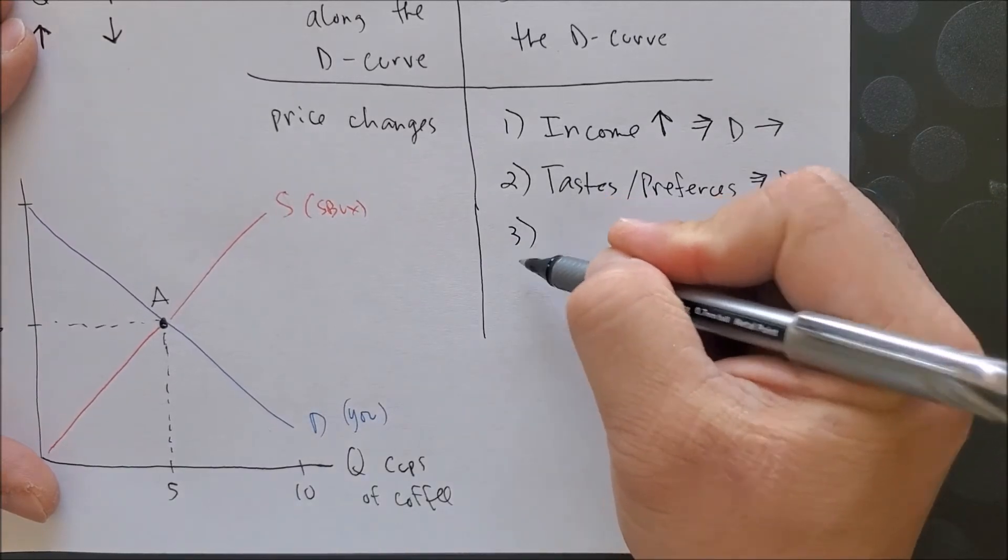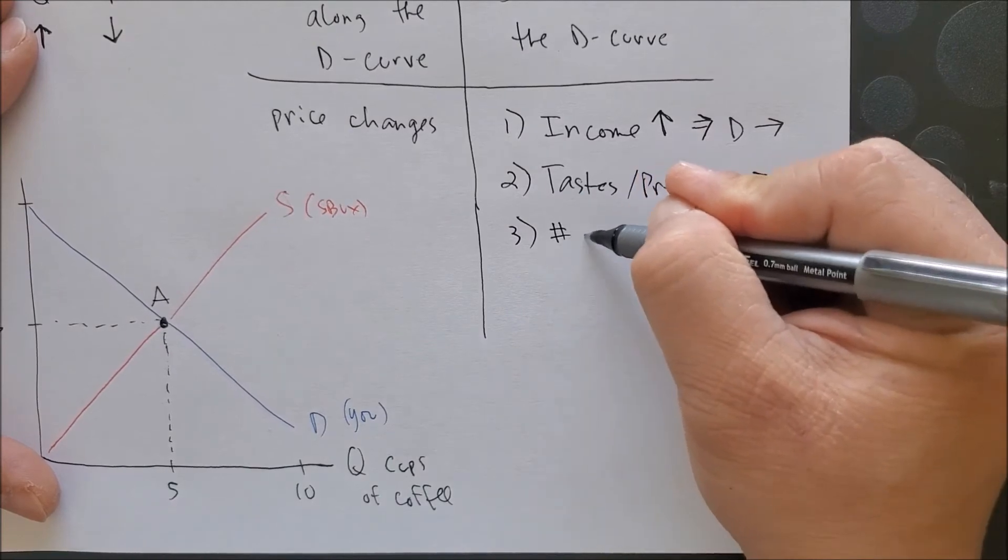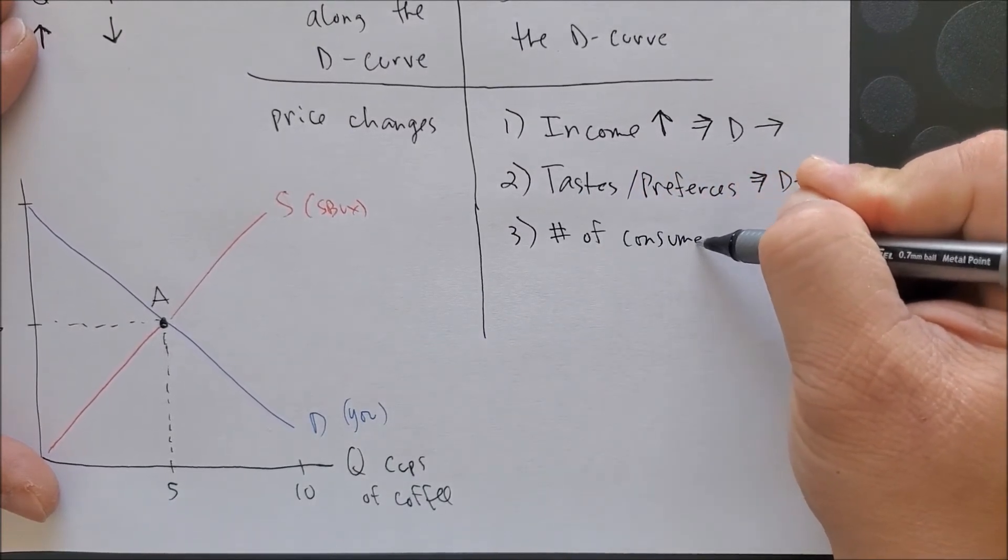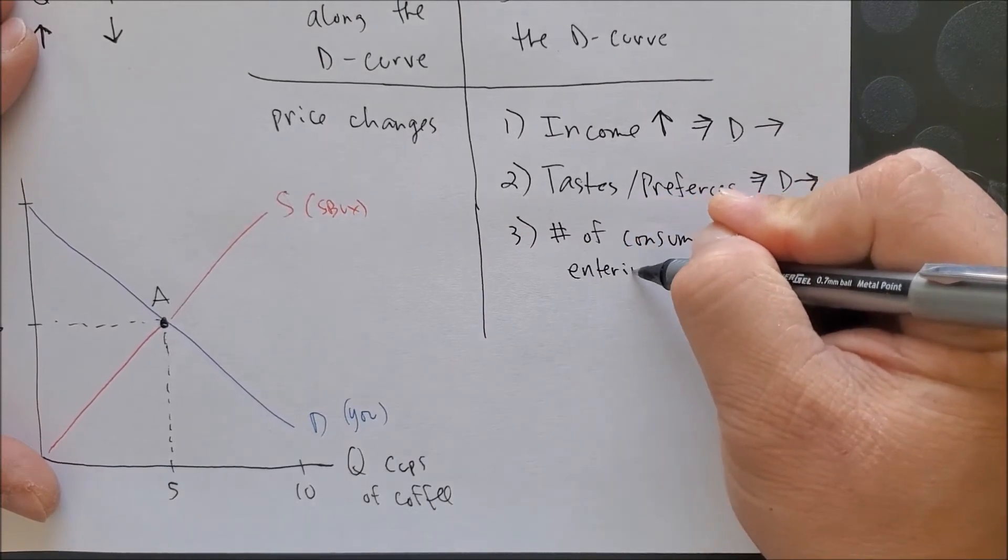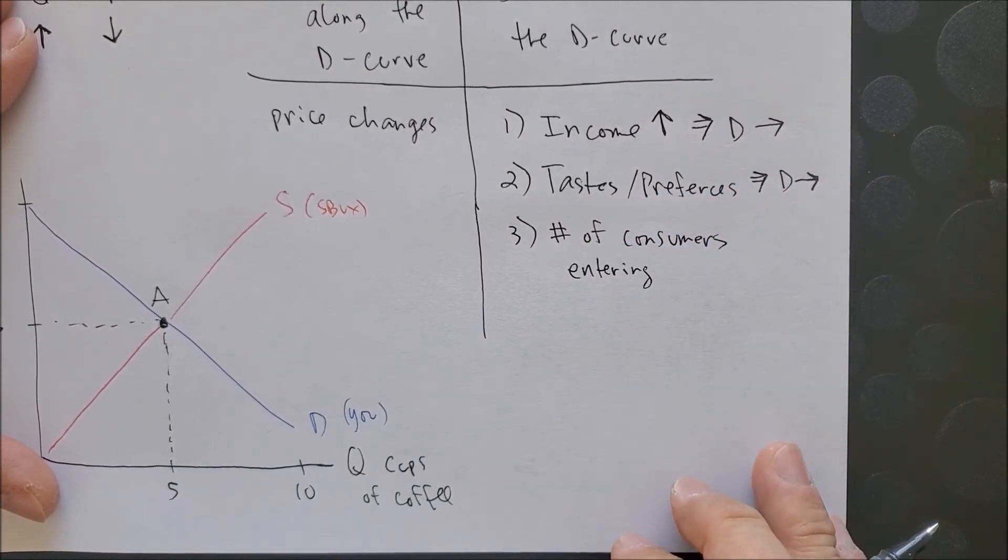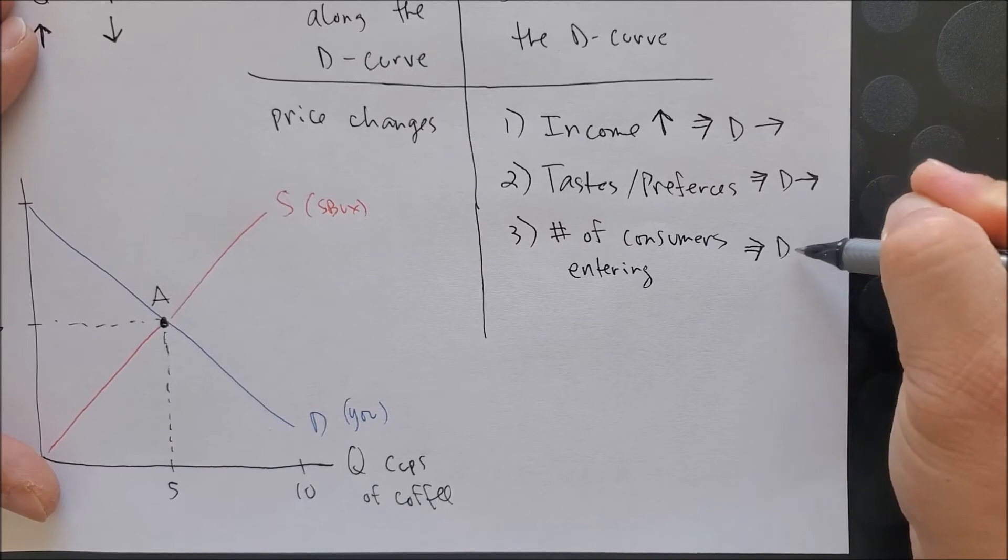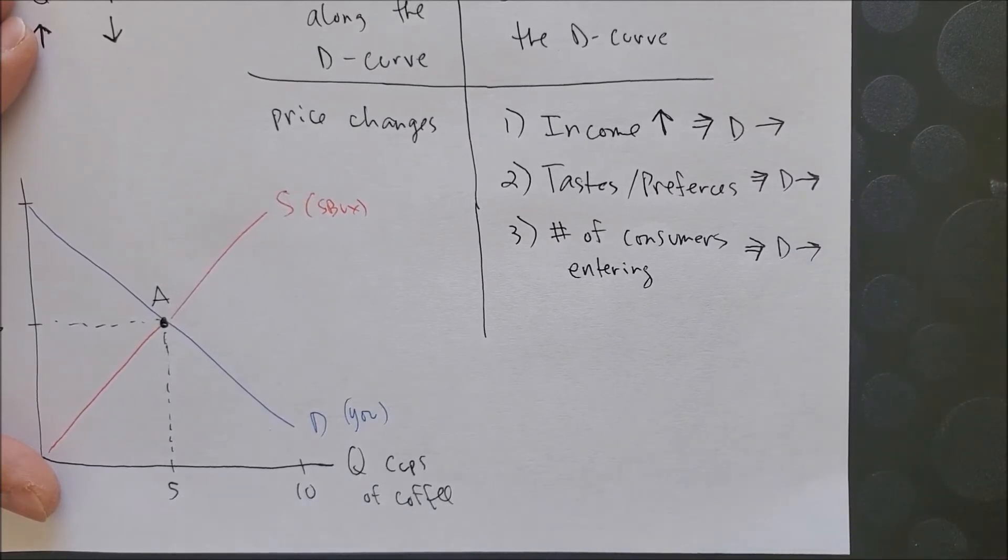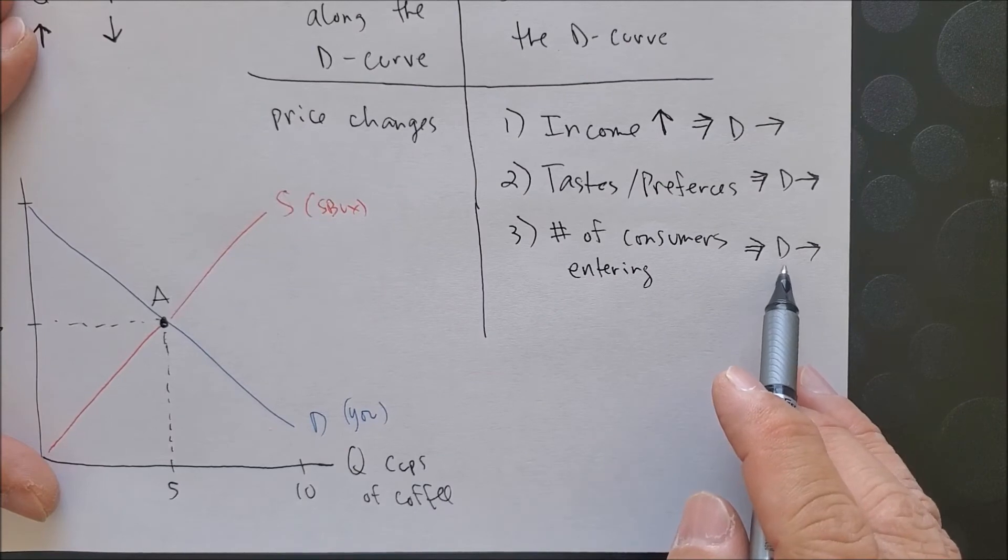The third factor that would shift demand is the number of consumers either entering or exiting a market. So when consumers are entering the market, perhaps because the store just opened, there's a higher likelihood that consumers are going to consume goods. Markets, when consumers are entering the market, if this were to happen, the demand curve would shift to the right.